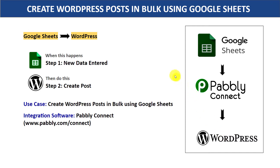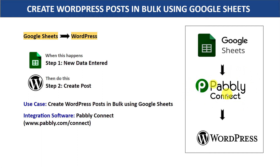I would suggest that you bring in some automation, so that whenever data is entered in Google Sheets, a post is automatically created on WordPress. In this video, we will be using Pably Connect to integrate Google Sheets and WordPress. The best part of using Pably Connect is there is no need for coding skills or programming knowledge. It can be done easily — let me show you with an example.